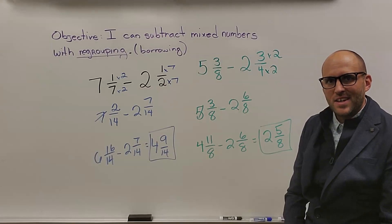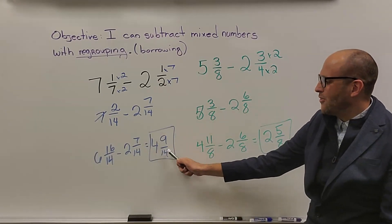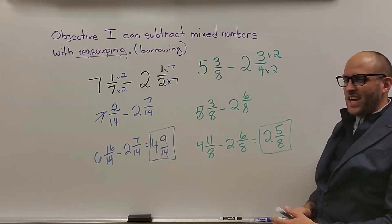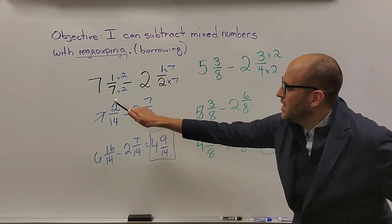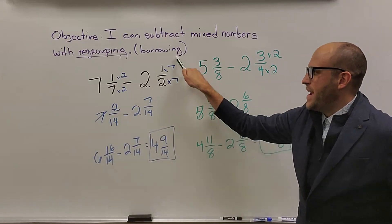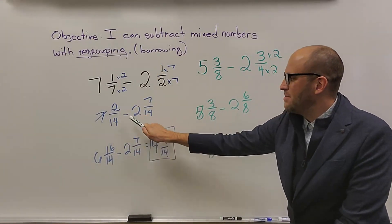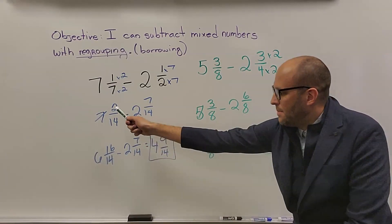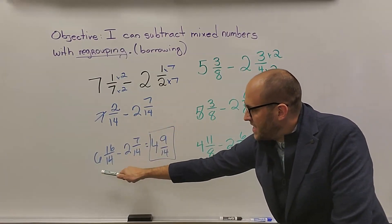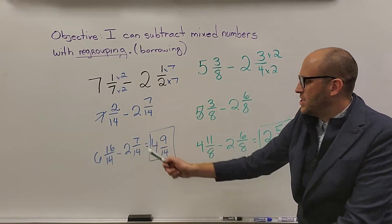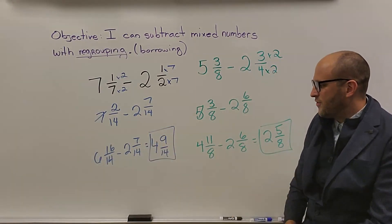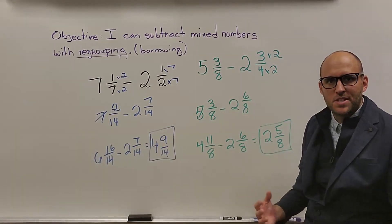All right, friends. How did we do? Hopefully we ended up with 4 and 9 over 14 and 2 and 5 eighths. Let's take a look. So after we made equivalent fractions here, we should have ended up with 7 and 2 fourteenths minus 2 and 7 fourteenths. Had to borrow, so that means we should have gotten 6 and 16 over 14 minus 2 and 7 fourteenths. Gets us 4 and 9 over 14. No simplifying needed.